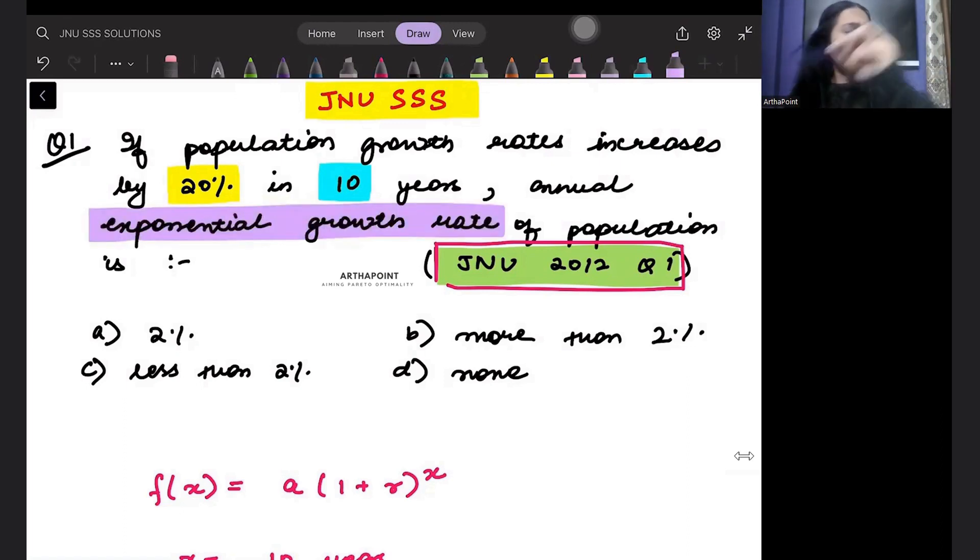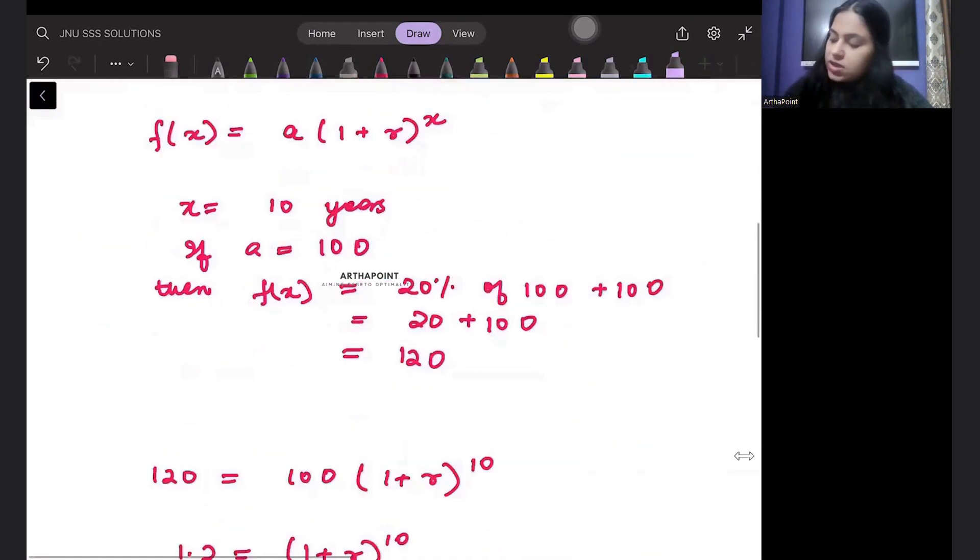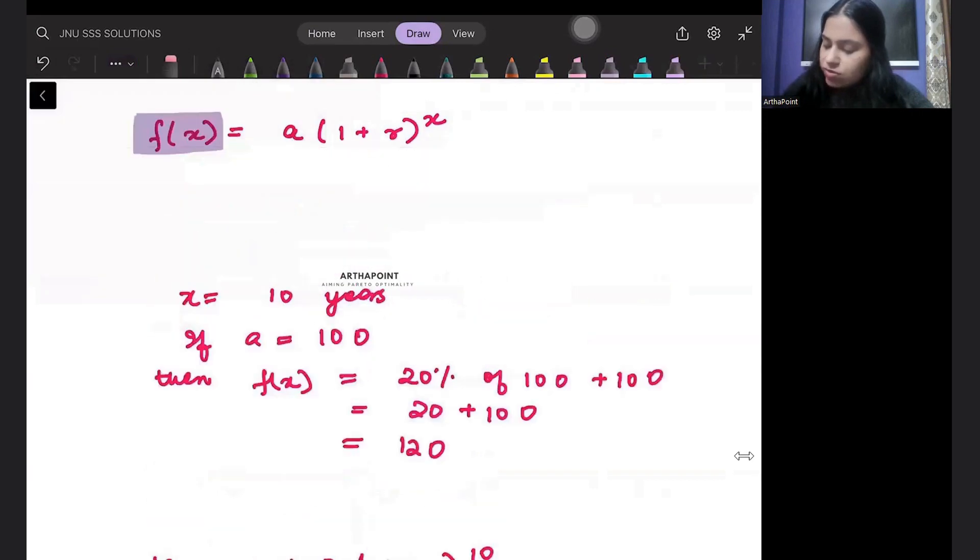What I can do in this case is say that the final answer is a function of x, a function of time. A simple way to write this is principle times 1 plus r to the power t, this is going to be your final value, the final answer that you will be having.